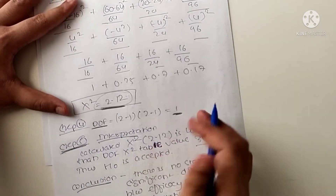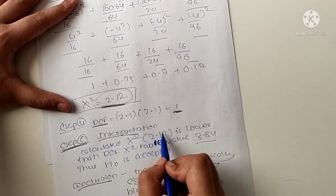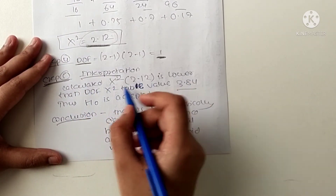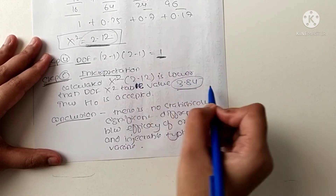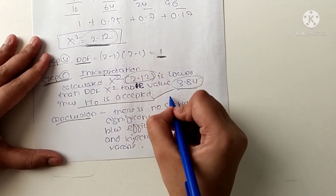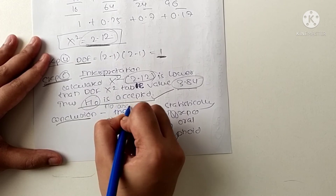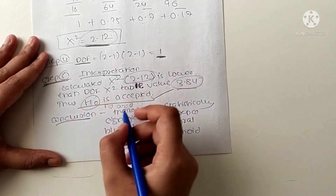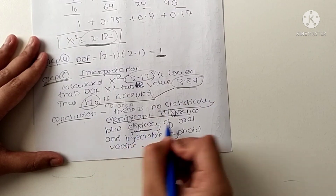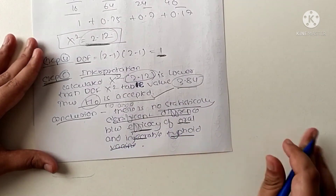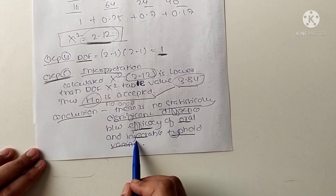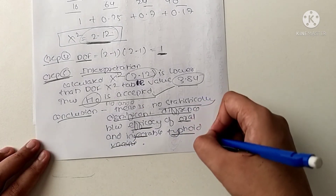Step five: interpretation and conclusion. The calculated chi-square value is 2.12, which is lower than the chi-square table value of 3.84 at one degree of freedom. Since the calculated value is lower, the null hypothesis is accepted. The conclusion is that there is no statistically significant difference between the efficacy of oral and injectable typhoid vaccines.